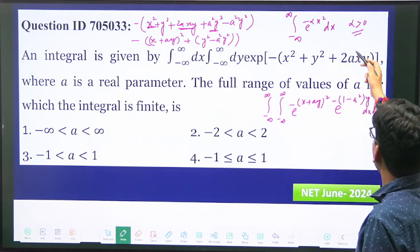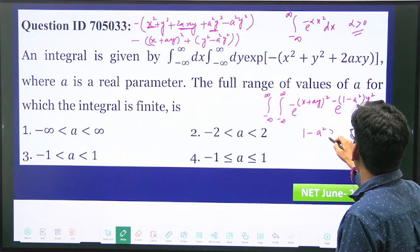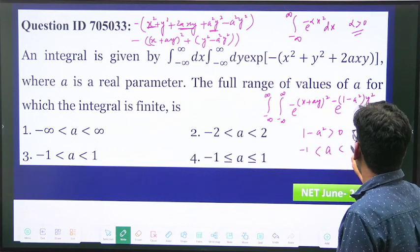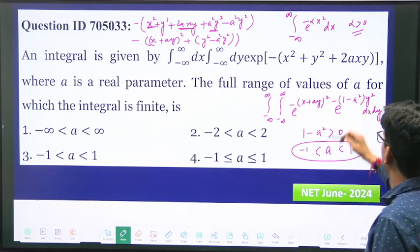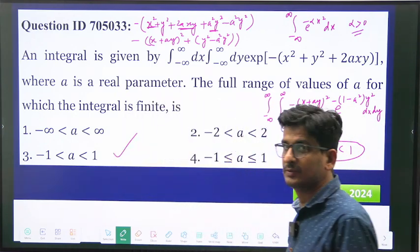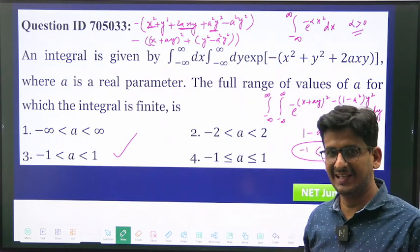So a will be between minus 1 and 1 to make this integration possible. So option 3 is the correct option.